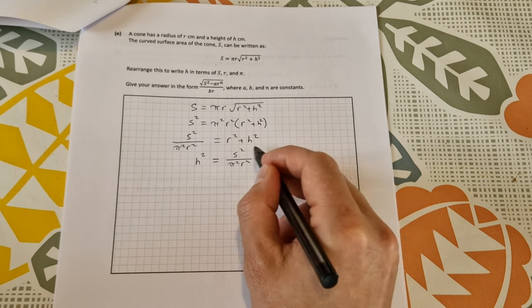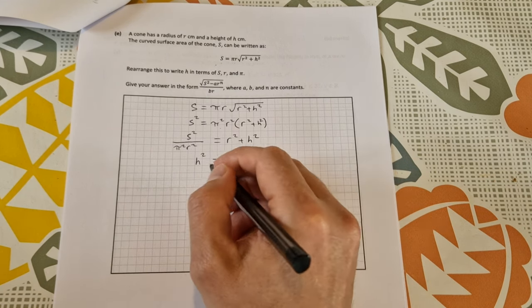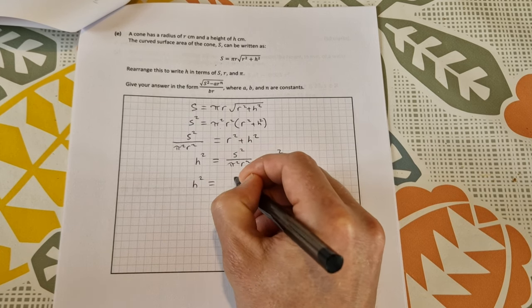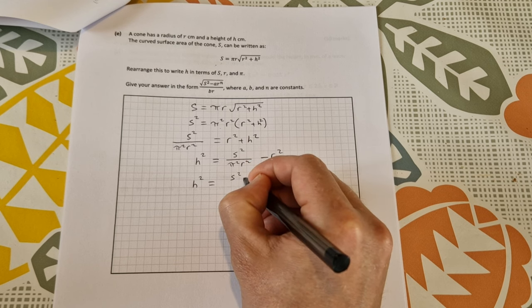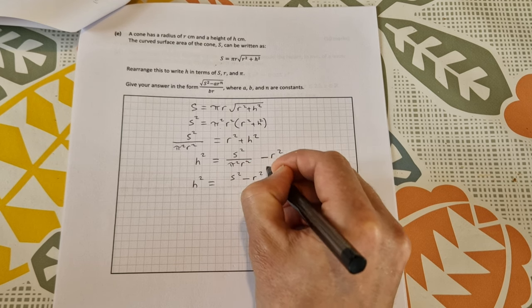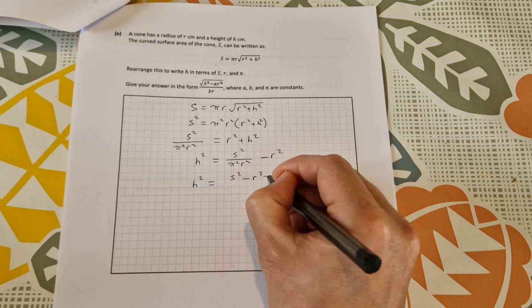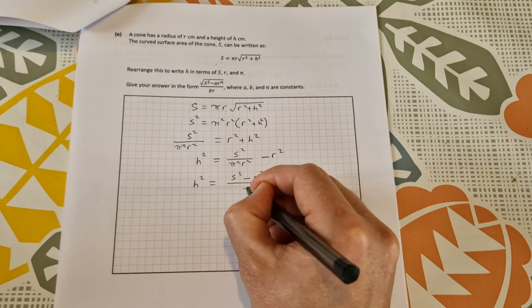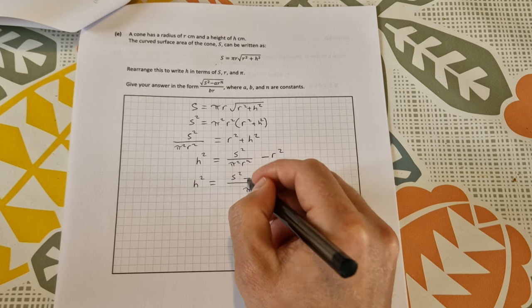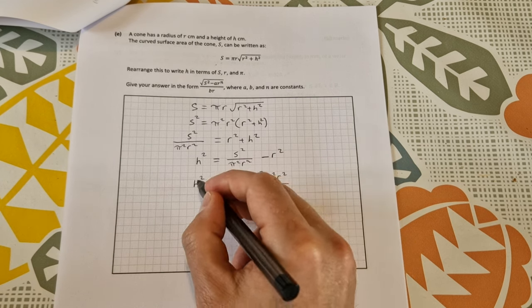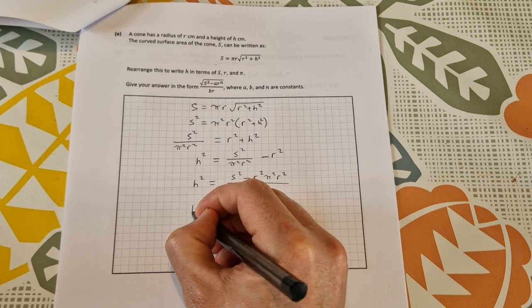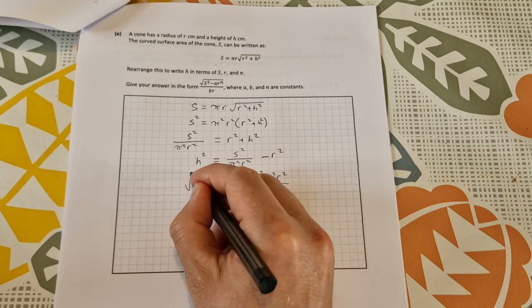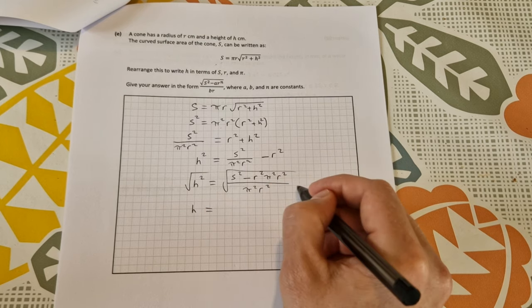I can write this then as one fraction before I go taking the square root. So h squared is equal to s squared minus r squared times the denominator. So times pi squared r squared over pi squared r squared. Now I have it written as one fraction. Take the square root of both sides. So the square root of h squared is h. The square root of this, like this, the square root of this whole thing here,